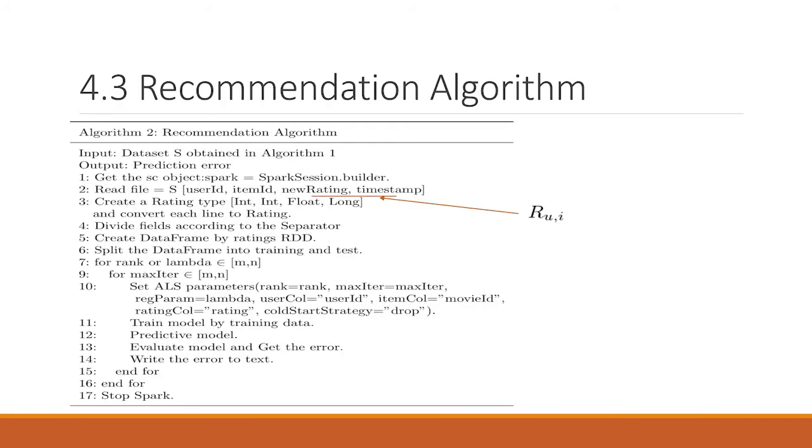In algorithm 2, recommendation algorithm. The parameter max iteration is the number of iterations at run time. Each iteration can improve the accuracy of algorithm. Rank is the number of implicit semantic factors in the model. That is the number of features. REG is a regularization parameter of ALS.